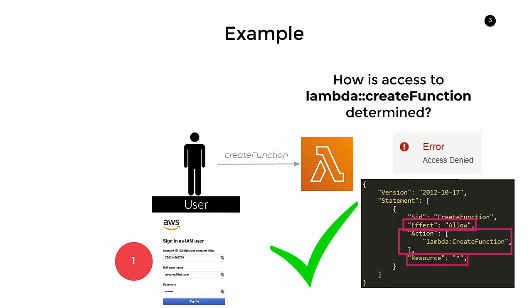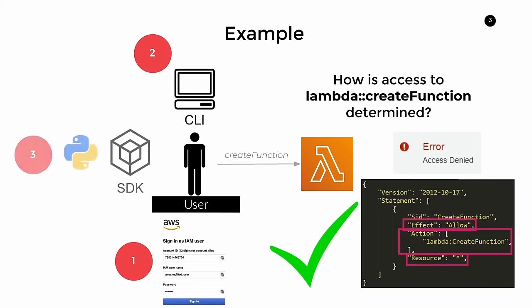When you sign in as a particular user — in this example I'm signing in as a user named aws_simplified_user — that user is scoped to specific permissions. AWS knows the policy document associated with this user, and that limits your actions in the console. The second way is through the CLI, the AWS command line interface, where you can issue commands to create functions. The third way, and probably the most common when you actually build applications, is programmatically using the AWS SDK.